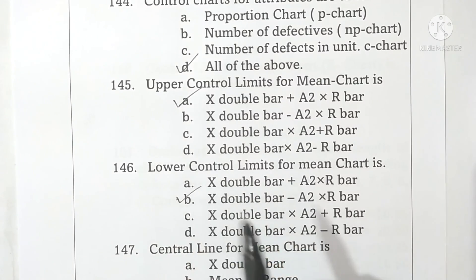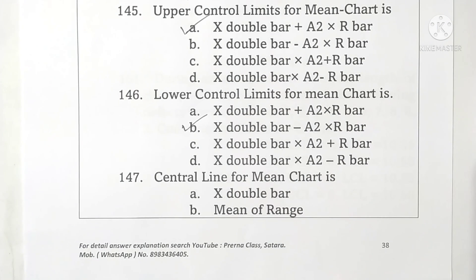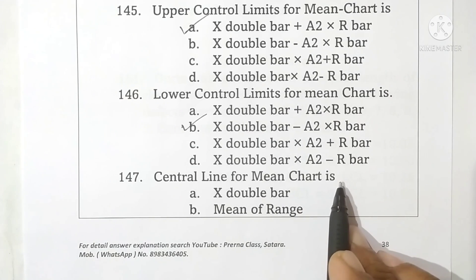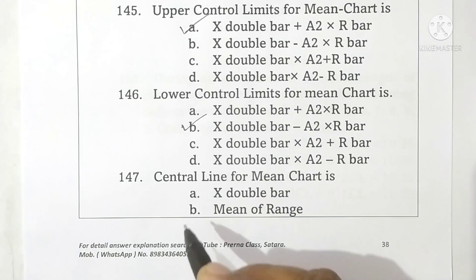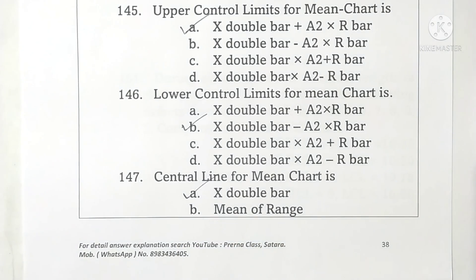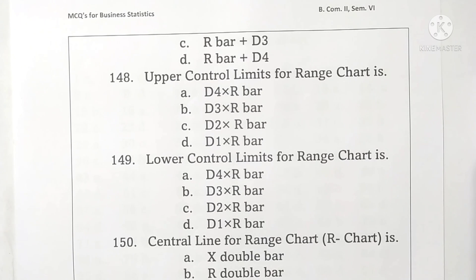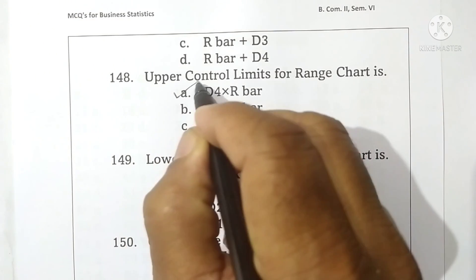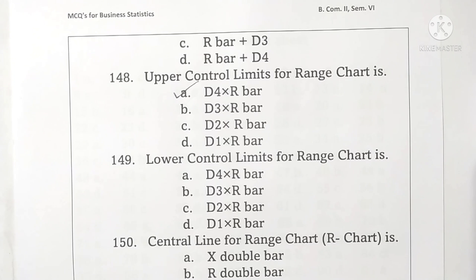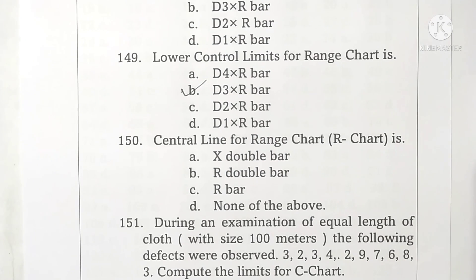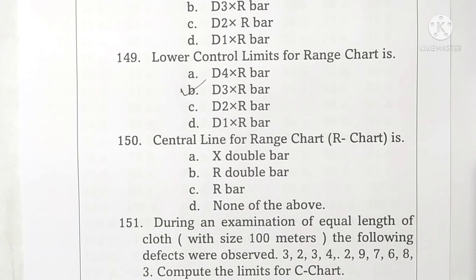Question 147: the center line for the mean chart is x-double-bar. Option A is correct. Question 148: the upper control limit for the range chart is D4 into R-bar. Option A is correct. Question 149: the lower control limit for the range chart is D3 into R-bar. Option B is correct.